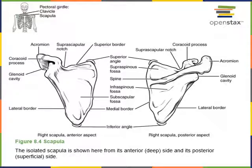The scapula, commonly known as the shoulder blade, is the large flat bone with a triangular body on the posterior of the shoulder. You can see the inferior angle, superior angle, and at the lateral angle, the glenoid cavity. The glenoid cavity contains the glenoid fossa, a smooth surface that articulates with the head of the humerus to form the shoulder joint.